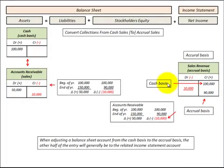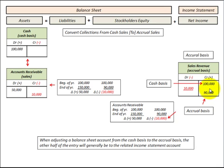In the case where we had an increase in accounts receivable of $50,000, we would credit our sales revenue for that increase. Our accrual basis would be the $100,000 cash basis plus the $50,000 credit for the increase in accounts receivable, giving us sales revenue of $150,000 on the accrual basis.